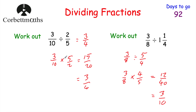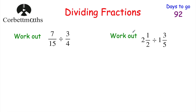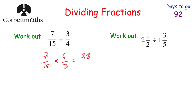So to divide fractions, we multiply by the reciprocal of the fraction we're dividing by. Here are two questions to try: work out 7 fifteenths divided by 3 quarters, and work out 2 and a half divided by 1 and 3 fifths. For the first one — 7 fifteenths multiplied by the reciprocal 4 thirds. 7 times 4 is 28, and 15 times 3 is 45. So we've got 28 over 45, and that can't be cancelled down. So the answer is 28 forty-fifths.